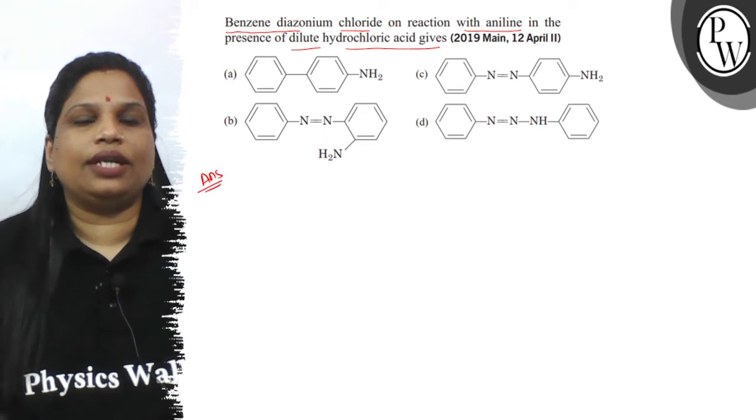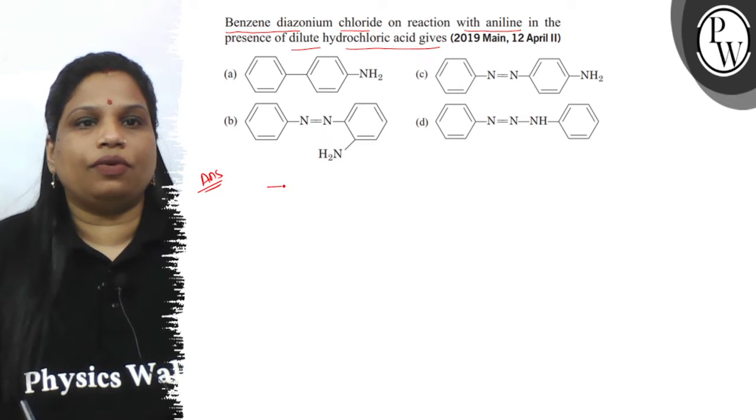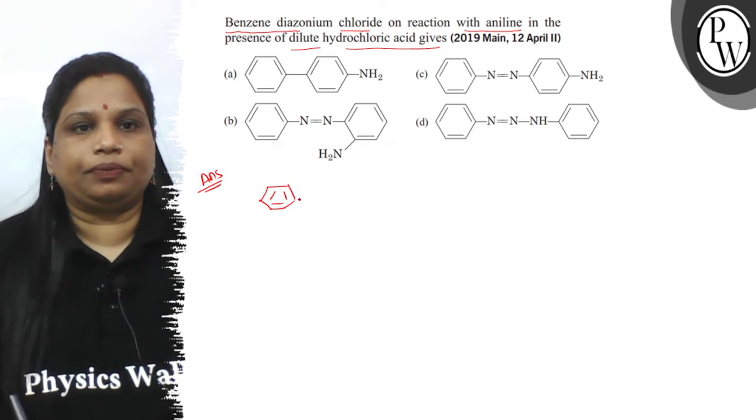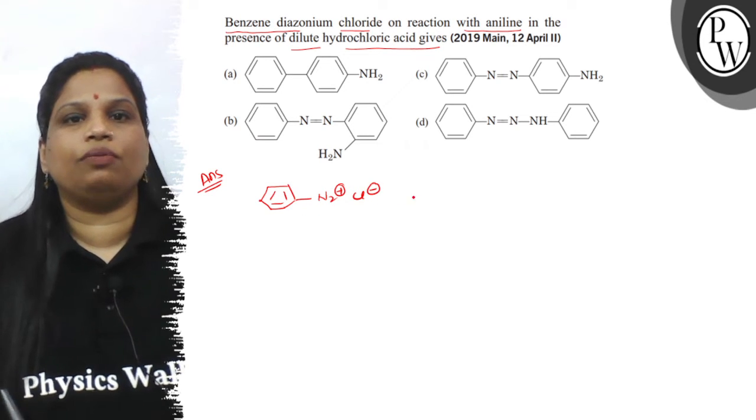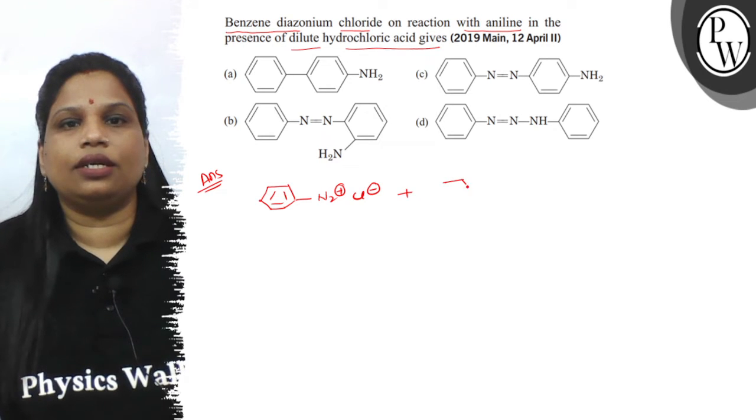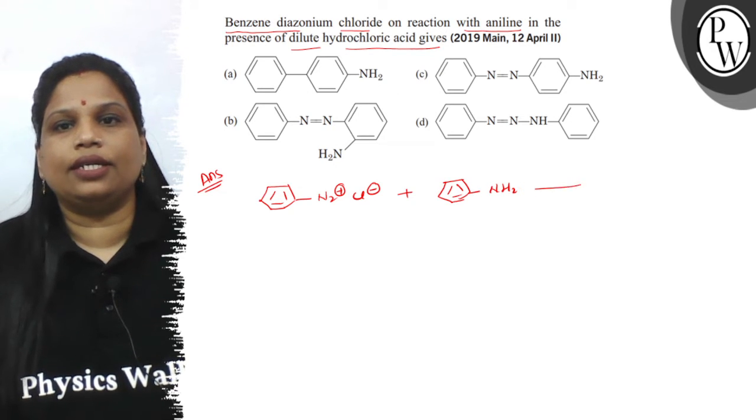Let's write down the reactants. First is benzene diazonium chloride. This is the structure of benzene diazonium chloride, and it is treated with aniline. And the structure of aniline in acidic medium, hydrochloric acid.